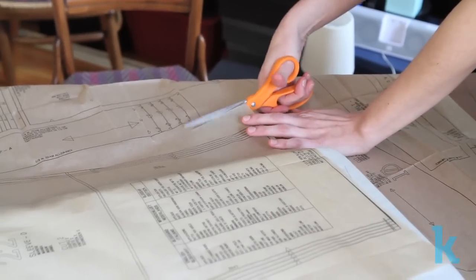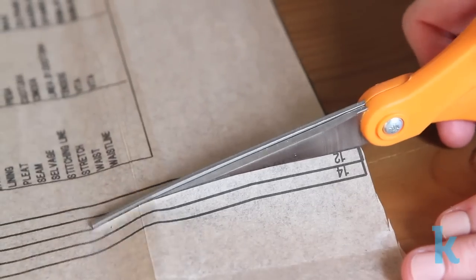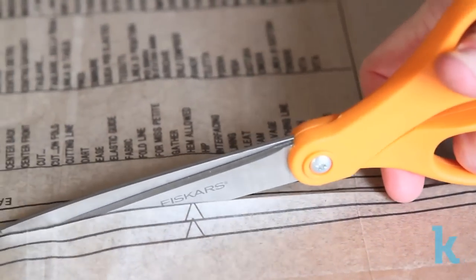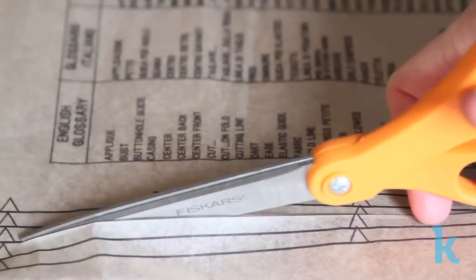Most pattern pieces include several sizes. Locate your size and trim each piece along that line. Keep in mind that your size number on the pattern will be different from the clothing you buy at the store.